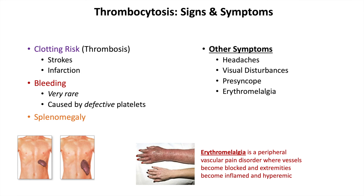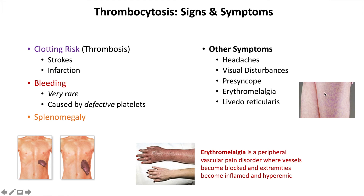Another sign is livedo reticularis, a skin finding showing a web-like pattern of vessels on the skin. Patients with thrombocytosis can also experience pruritus or excessive itching, often called aquagenic pruritus because it is induced by water — particularly warm water — such as after taking a bath. This symptom can also be seen in polycythemia vera.